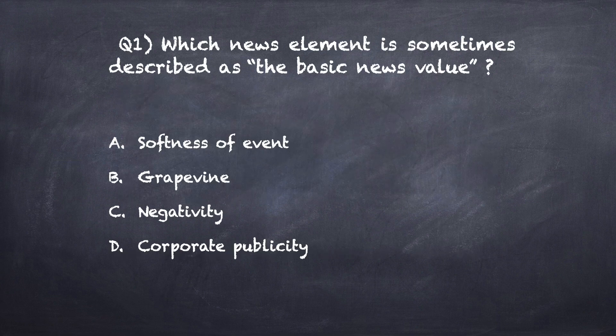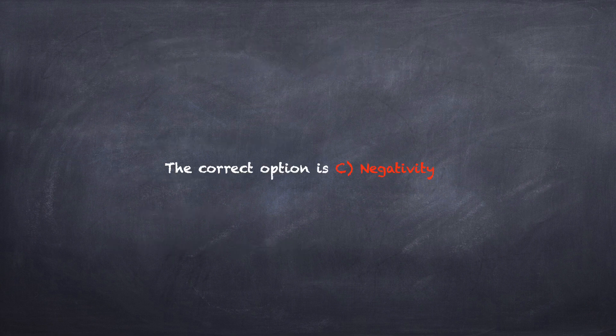Question number one: Which news element is sometimes described as the basic news value? Option A: softness of event. Option B: grapevine. Option C: negativity. Option D: corporate publicity. The correct option is C, negativity.